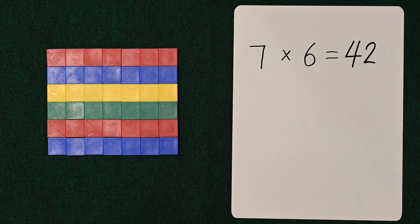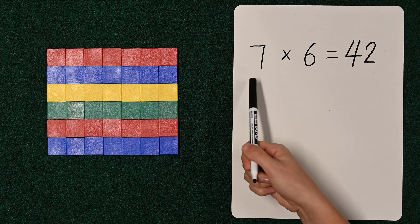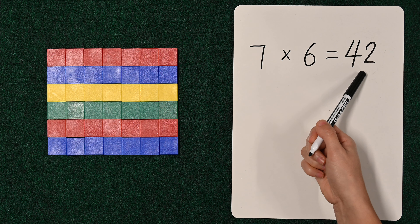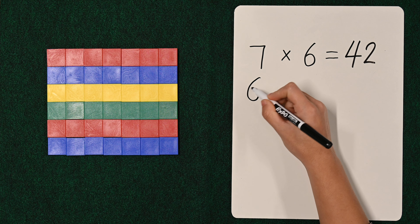And you can count for yourself to make sure. And once you're sure that that's correct, please remember to remember: seven sixes are forty-two, six sevens are forty-two.